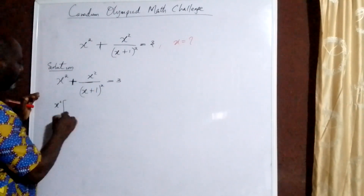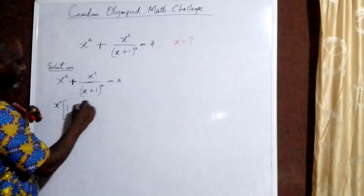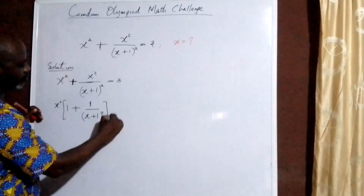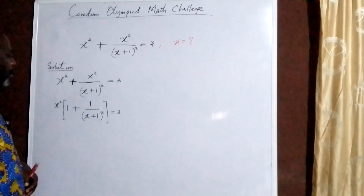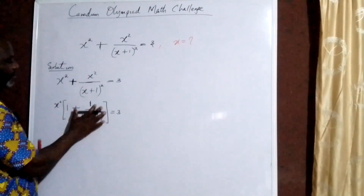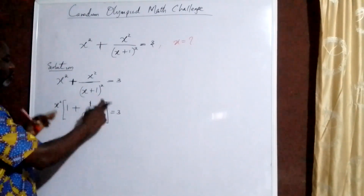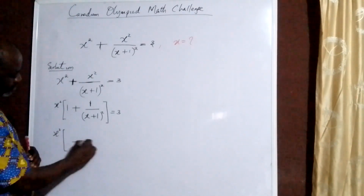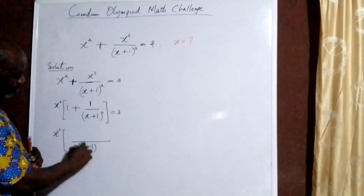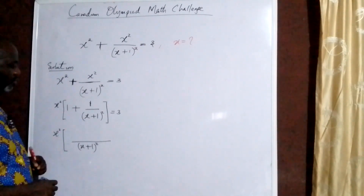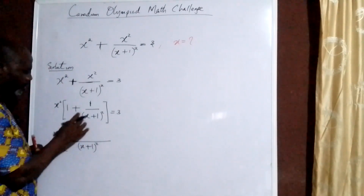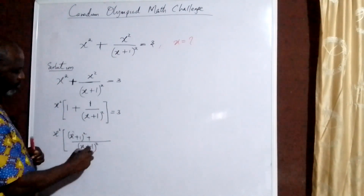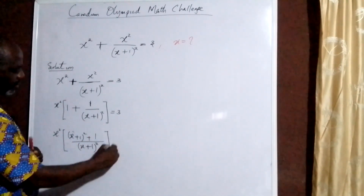We have x squared, then open brackets: 1 plus 1 all over (x+1), all squared, close bracket, equal to 3. Next is to simplify the expression within the square brackets. The LCM is (x+1) squared. This will give us x squared times [(x+1) squared plus 1] all over (x+1) squared, equal to 3.